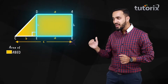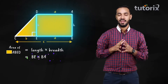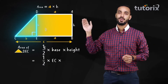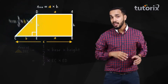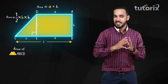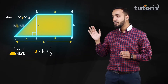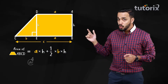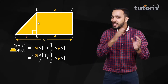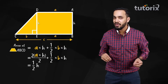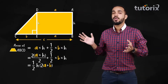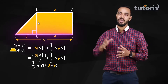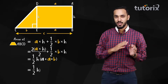So, area of the rectangle ABED is equal to BE × BA, that is A × H. And area of right triangle DEC is equal to half × EC × ED, that is half × B × H. Now, the area of trapezium ABCD is equal to A × H + half × B × H. We want to take half H common, so we first write A × H as 2A × H/2. Taking half H common, we have area of trapezium = half H × (2A + B), which can also be written as half H × (A + A + B).